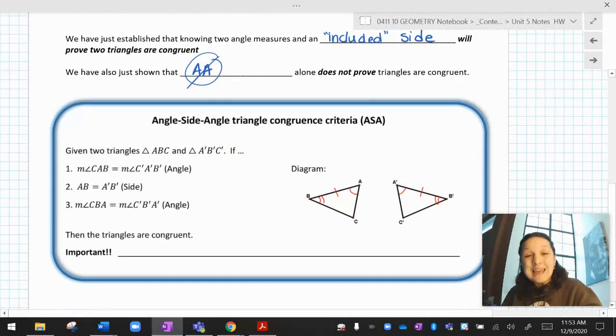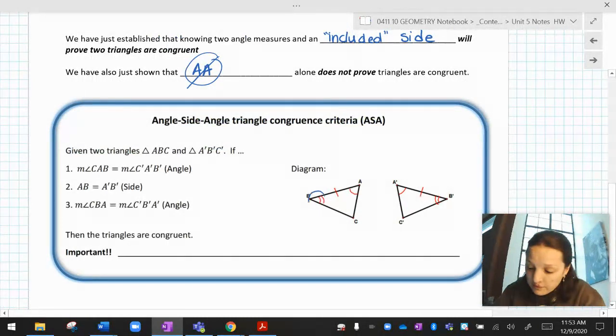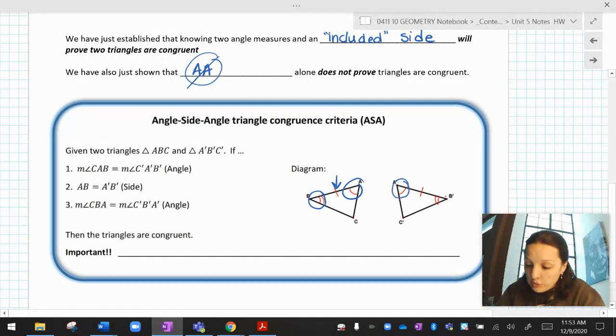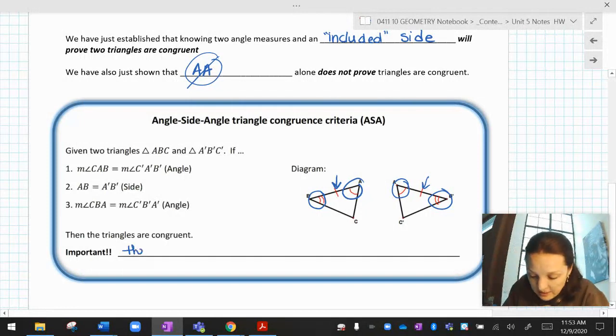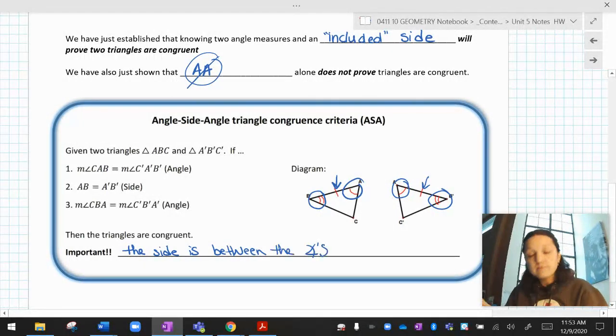We have also shown that just having AA, that's not good enough. If I just have angle angle and no side, I can't go anywhere with that. So we just proved that ASA is a thing. When you have two angles and the included side of one triangle, and they match two angles and the included side of another triangle, those two triangles are congruent. What's important is the side is between the angles.